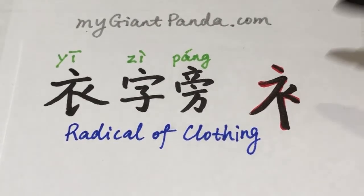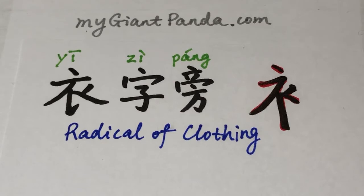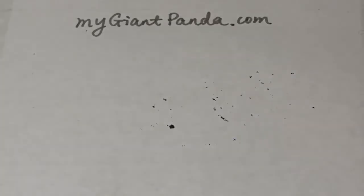这就是衣字旁。好了，接下来我就要给大家举两个带有衣字旁的词组。我们第一个要写的是裤子。